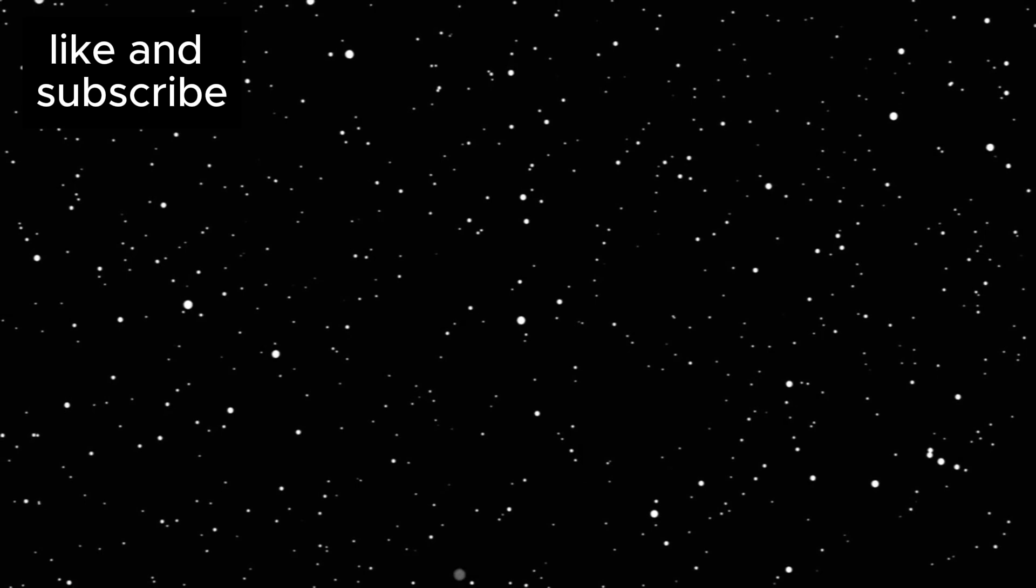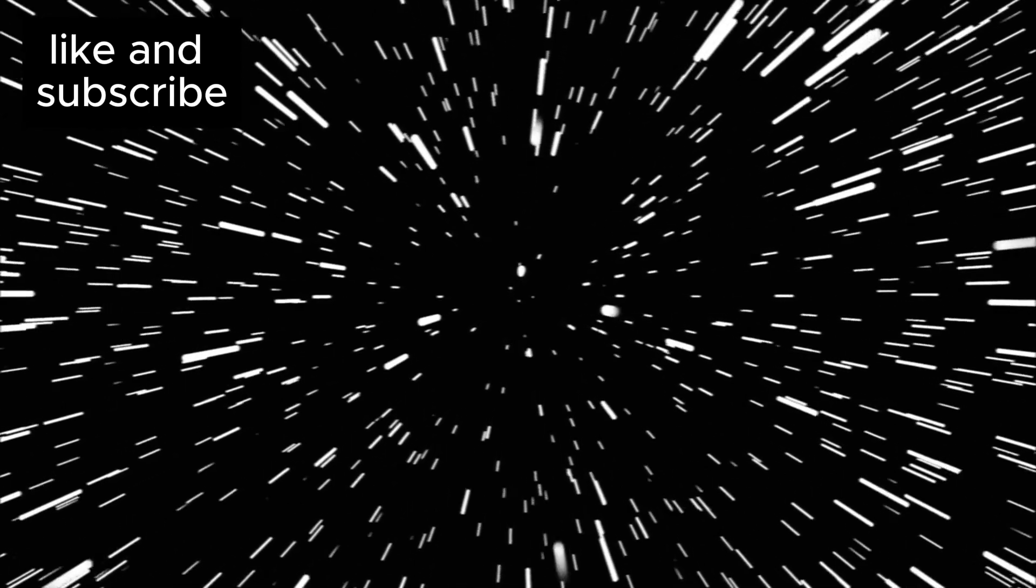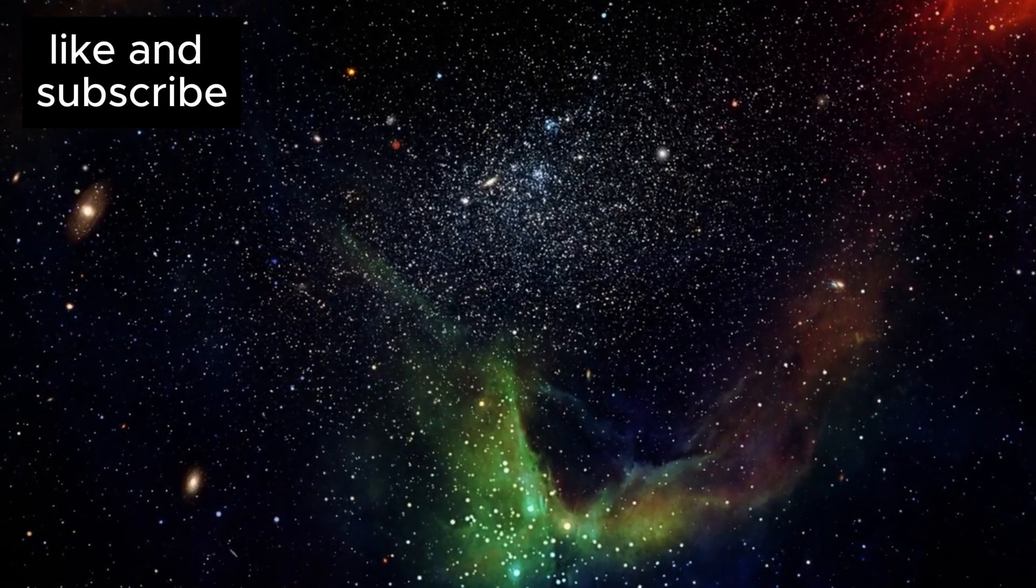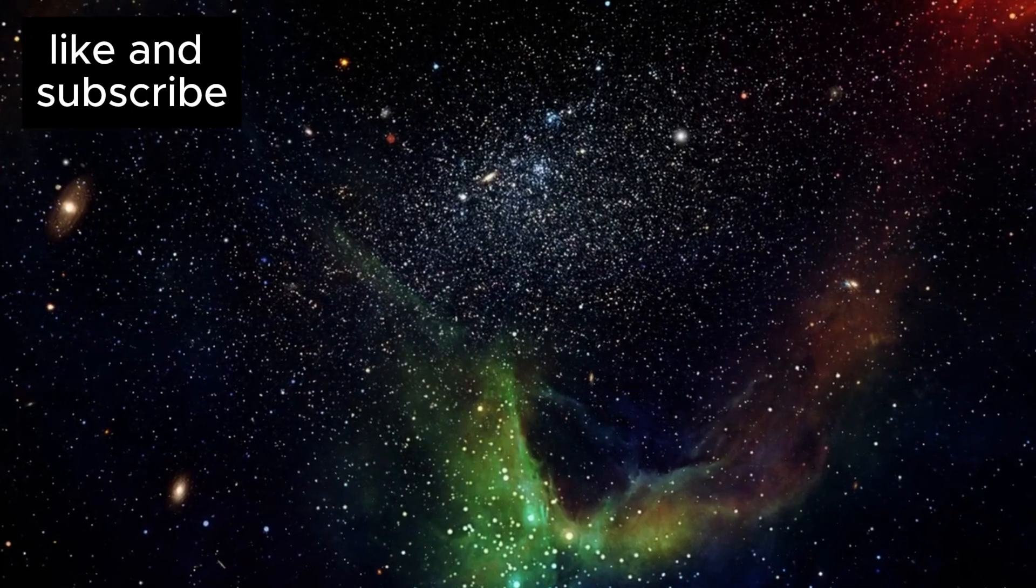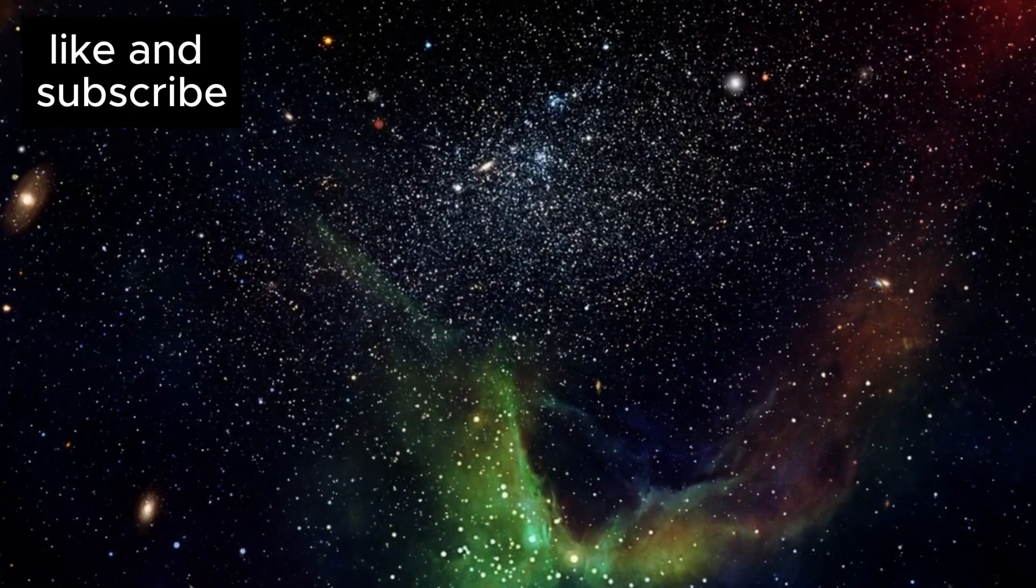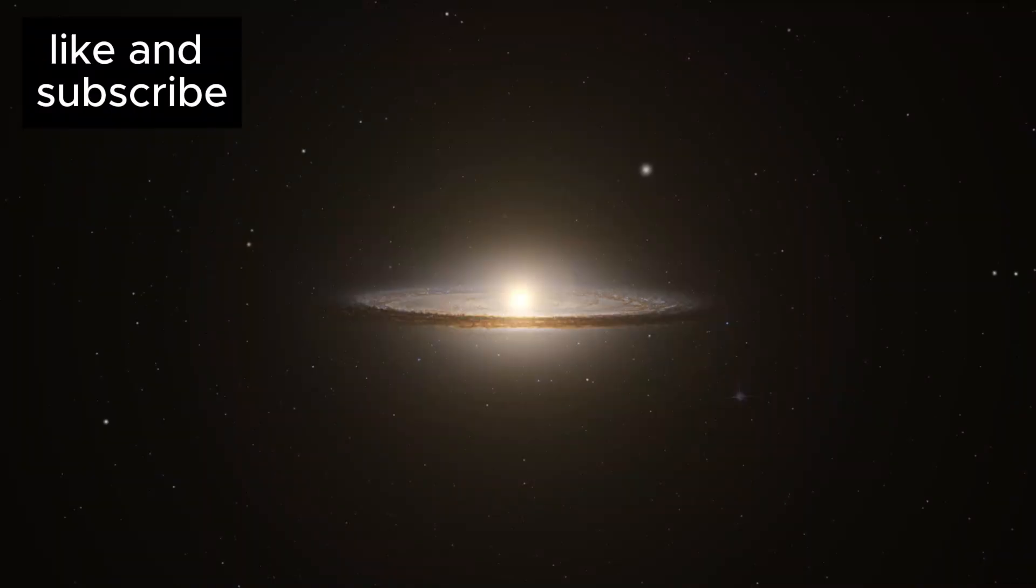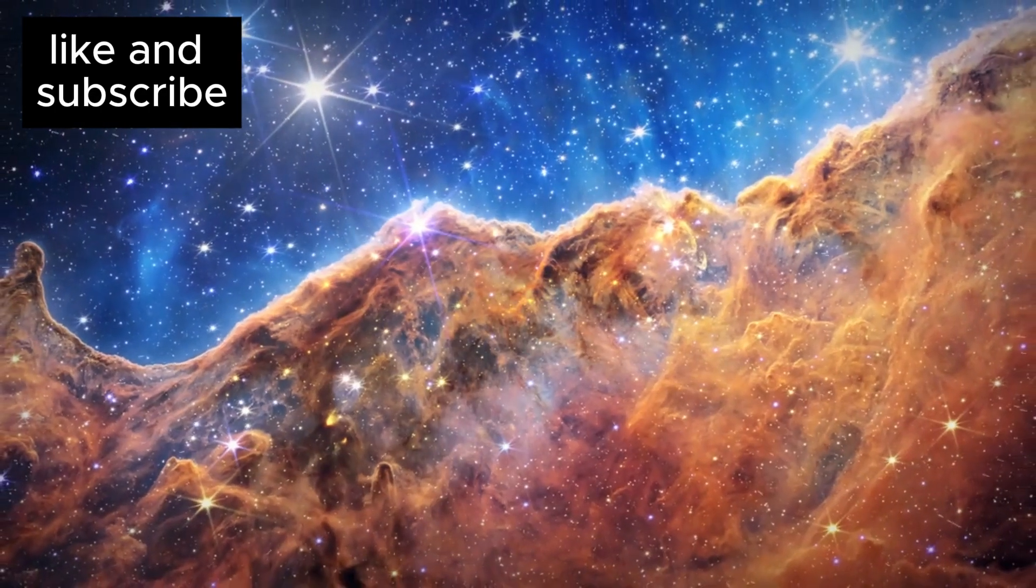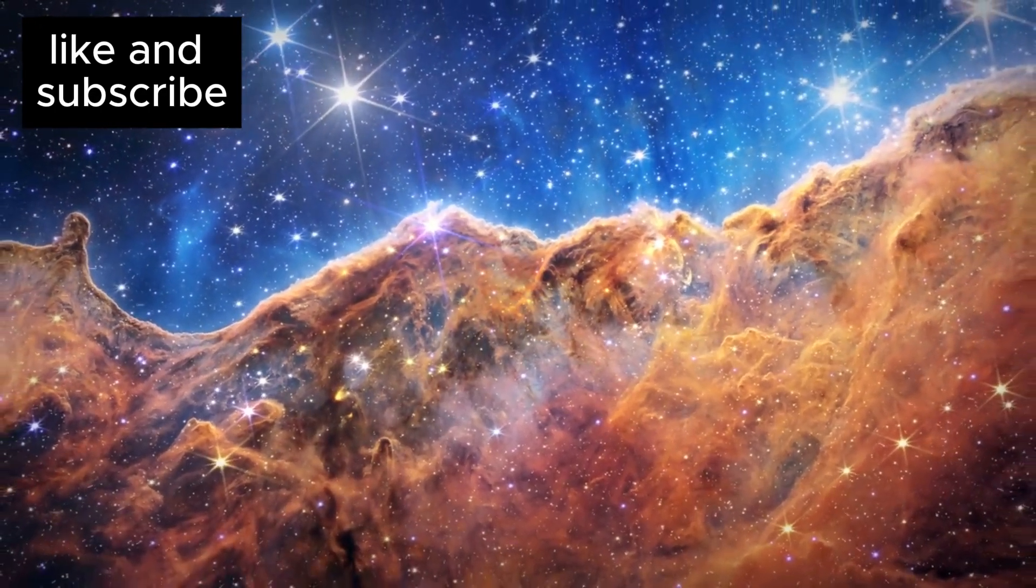Since light travels at a finite speed, the further away a galaxy is, the longer it takes for its light to reach us. This means that by studying galaxies that are billions of light years away, we're effectively looking back in time, witnessing the universe as it was eons ago. But to study these ancient galaxies, astronomers need a powerful tool, one capable of detecting faint light from galaxies at the farthest reaches of space. That's where the James Webb Space Telescope comes in.